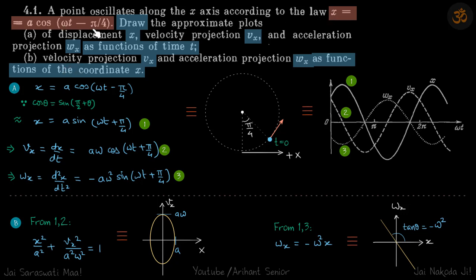We are given the equation x equals a cos omega t minus pi by 4 for this SHM. We need to draw the plots of displacement, velocity, and acceleration as a function of time, and then velocity and acceleration as a function of x.